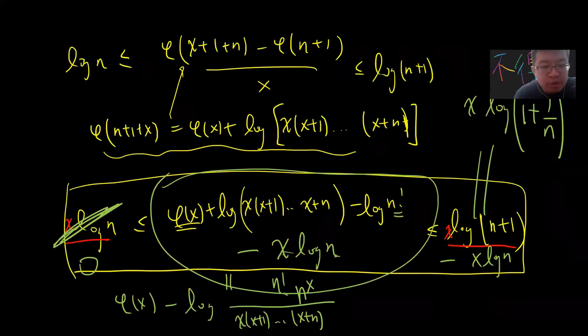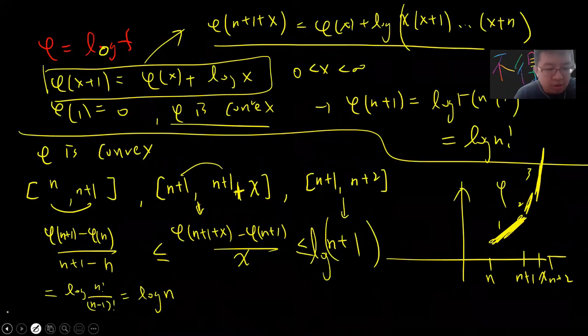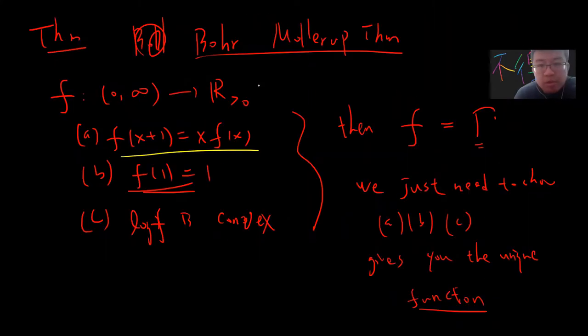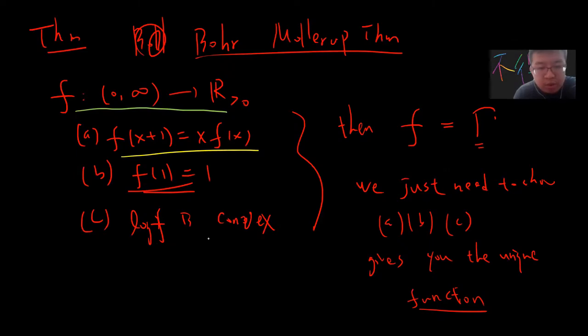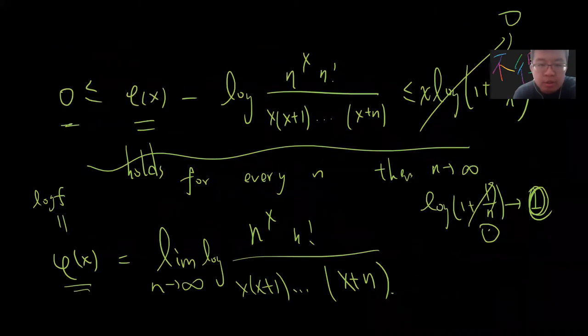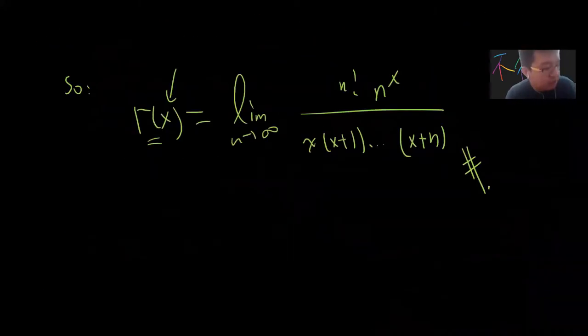Welcome to my YouTube video. Previously we already talked about a famous theorem in the gamma function which is called the Bohr-Mollerup theorem. This theorem says that if a function from the reals satisfies three properties — f(x+1) = x·f(x), f(1) = 1, and log f is convex — then f must be the gamma function. This is the real characterization of the gamma function.